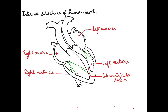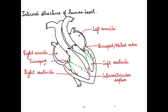Next we label the valves of the heart. Between the auricle and ventricle are the atrioventricular valves. The AV valve on the left side is called the bicuspid valve, or mitral valve, and it has two cusps. On the right side, the valve has three cusps and is called the tricuspid valve. These valves prevent the backflow of blood and ensure unidirectional flow of blood.